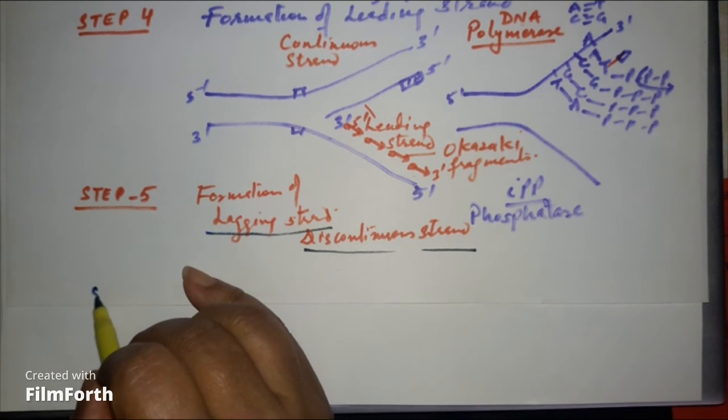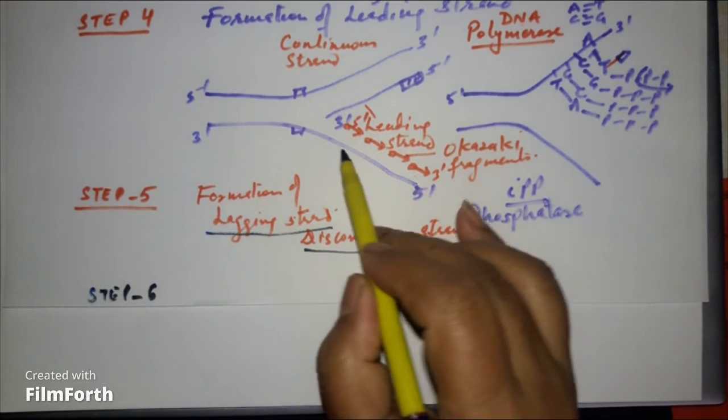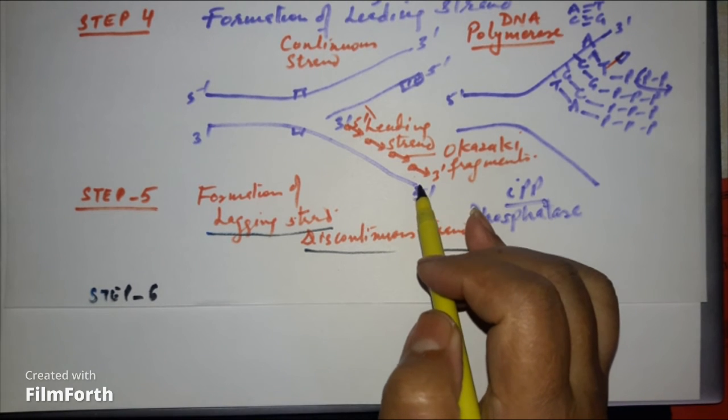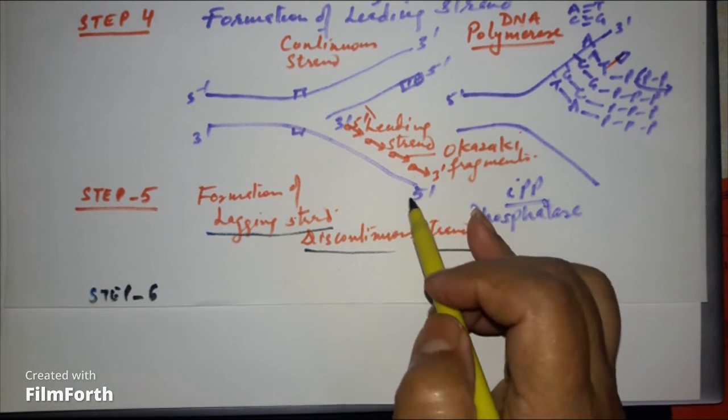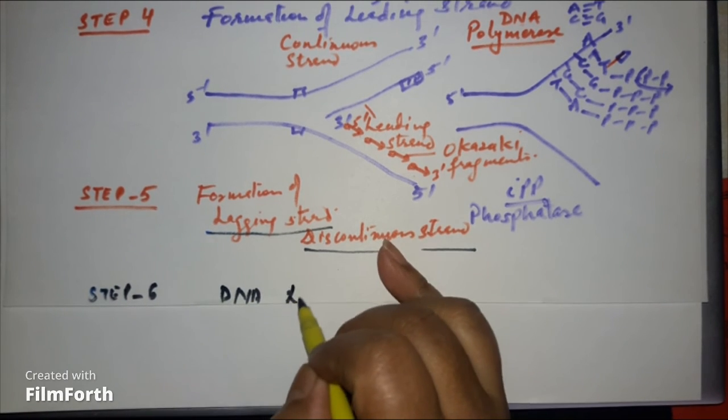Now step number 6, ligation. This means their joining. These will be joined with the help of an enzyme called DNA ligase. So DNA ligase will join these.